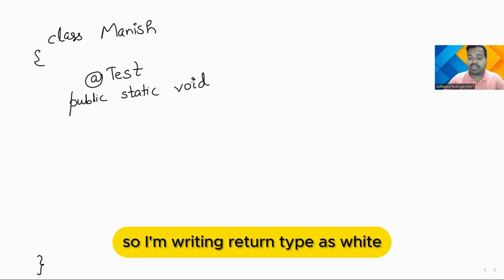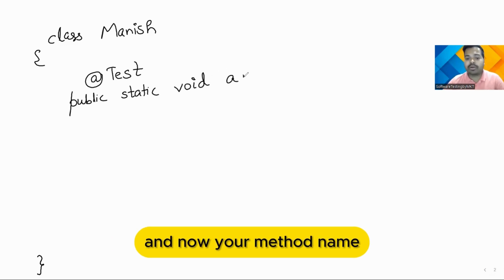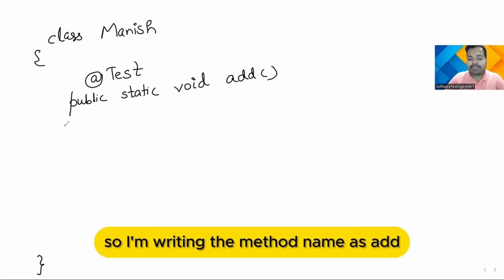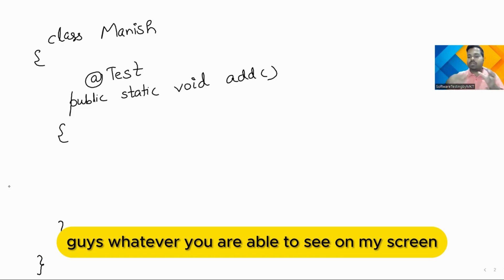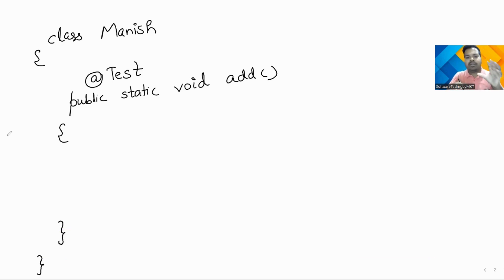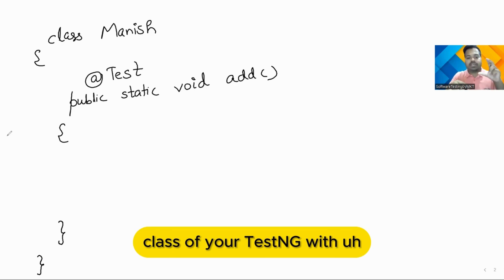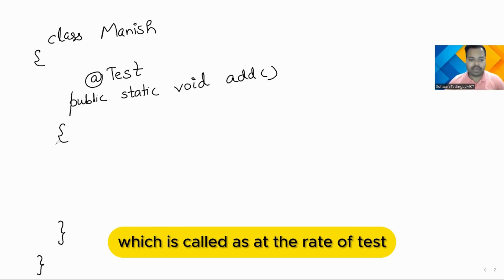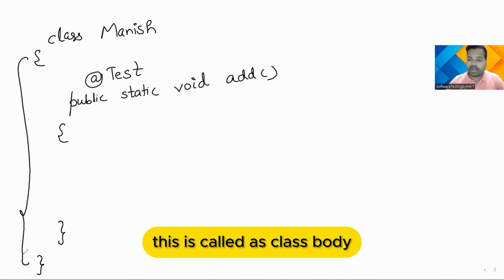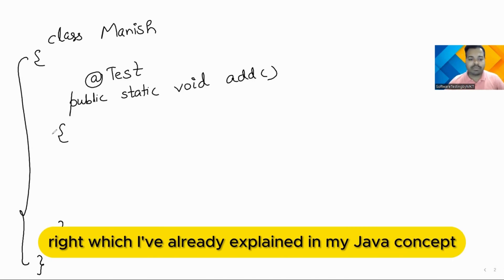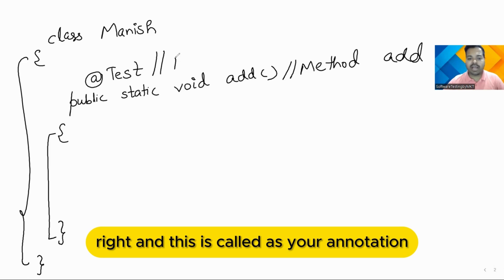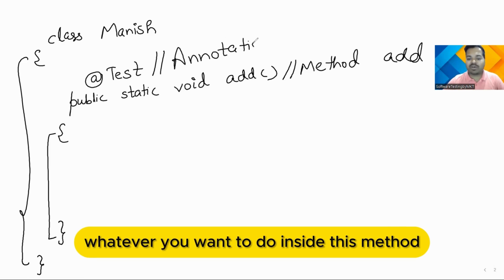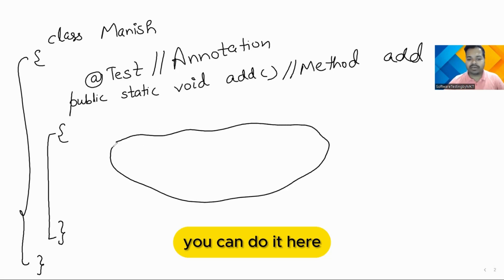Then you will have a return type — I'm writing void — and then your method name, which I'm calling 'add'. Every method has a method start and method end. Whatever you can see on my screen now is a sample TestNG class with the @Test annotation. This is the class body, this is the method body, this is your method name 'add', and this is your annotation. Whatever you want to do inside this method, you write your logic here.